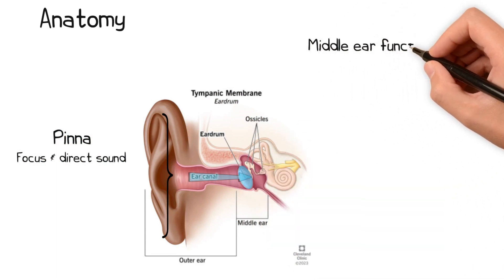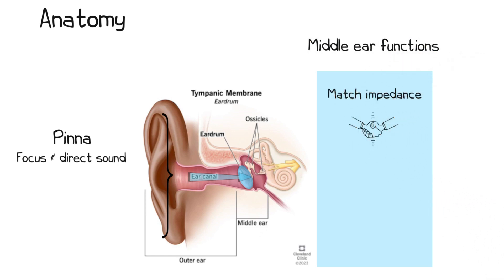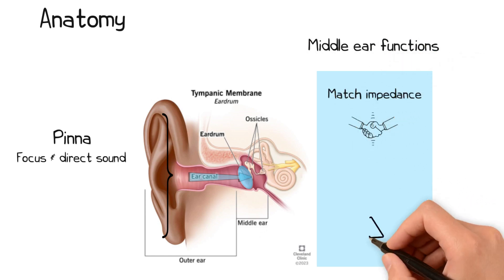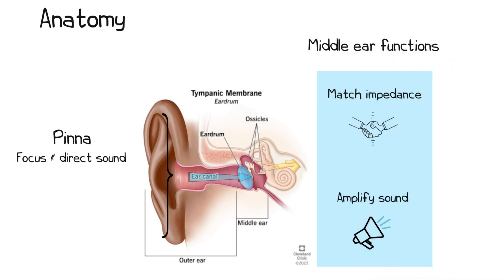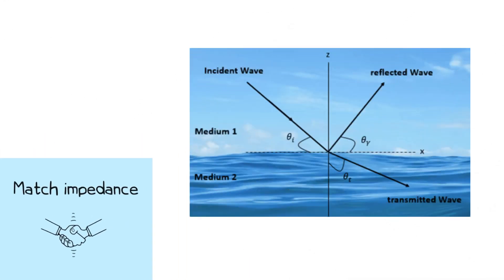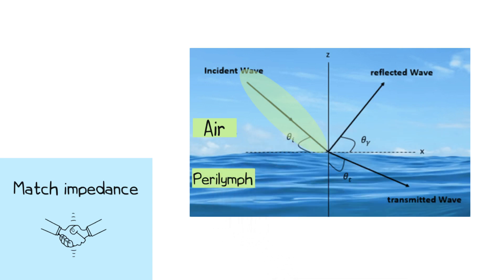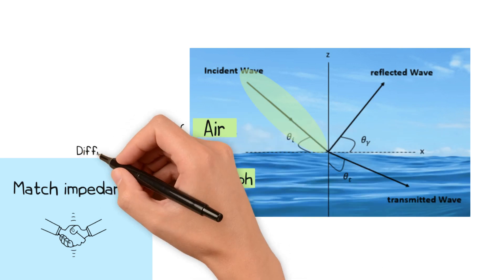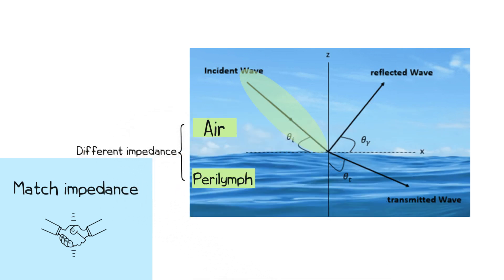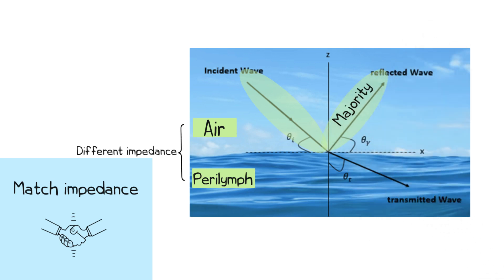The middle ear serves two functions: to match the sound impedance between air and perilymph, and to amplify the sound energy entering the inner ear. When sound energy travelling through air comes into contact with fluid, due to a difference in impedance, the majority of energy is reflected off the surface of the fluid. This is why it is so much quieter under water than above.